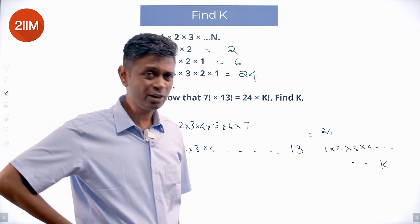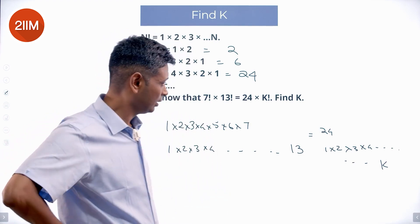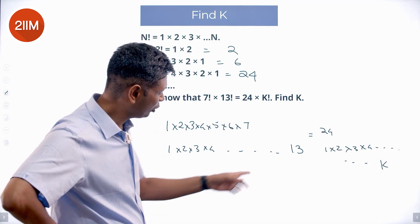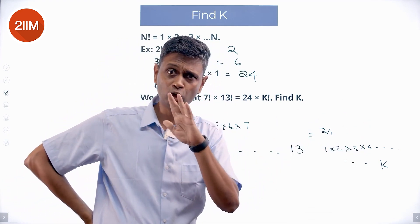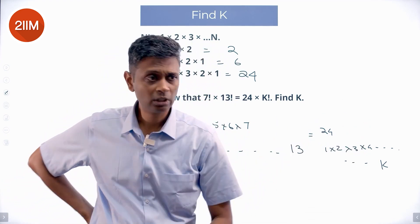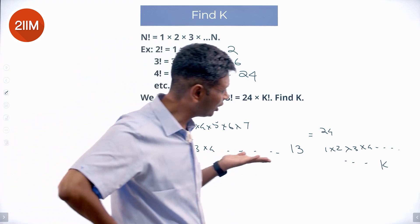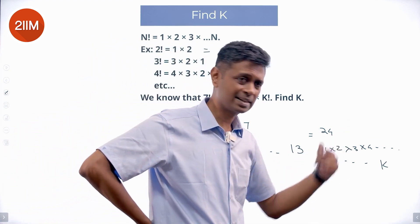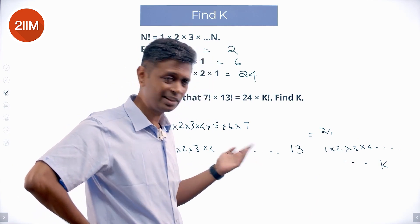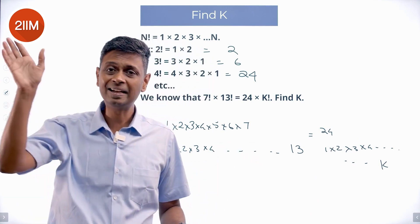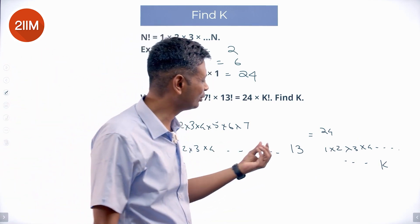Suppose I put k equal to 10. If I had to solve this like an equation, I would write 1 × 2 × 3 × 4 × 5 × 10 on one side and cancel matching terms from the other side, then deal with what remains.